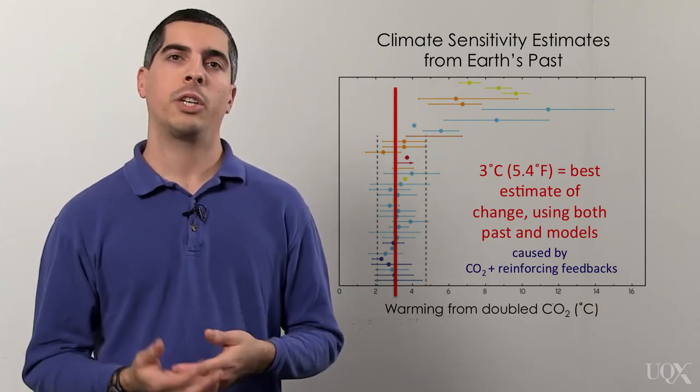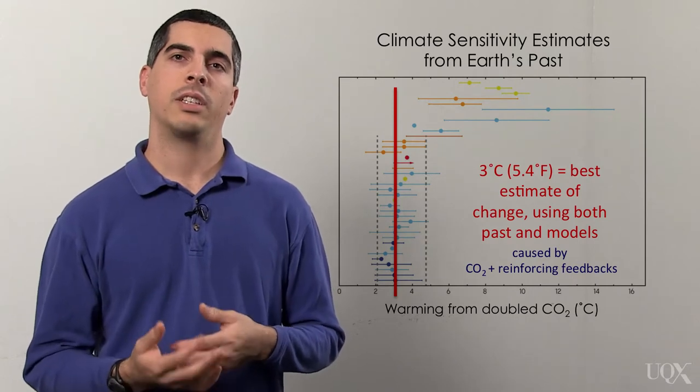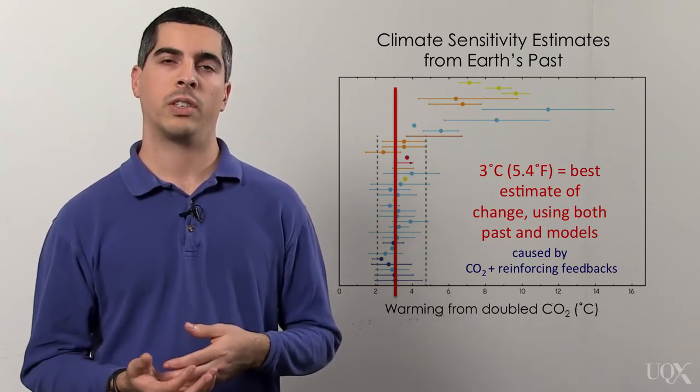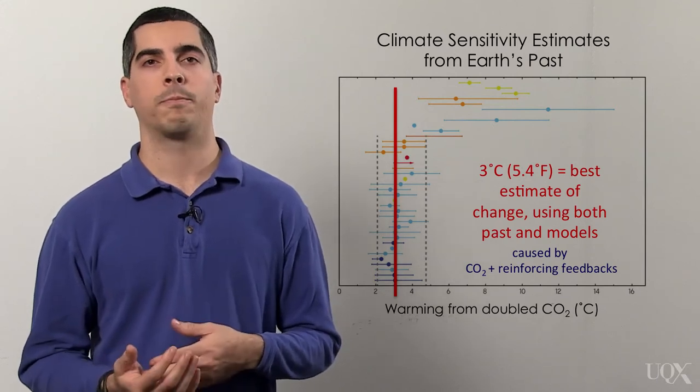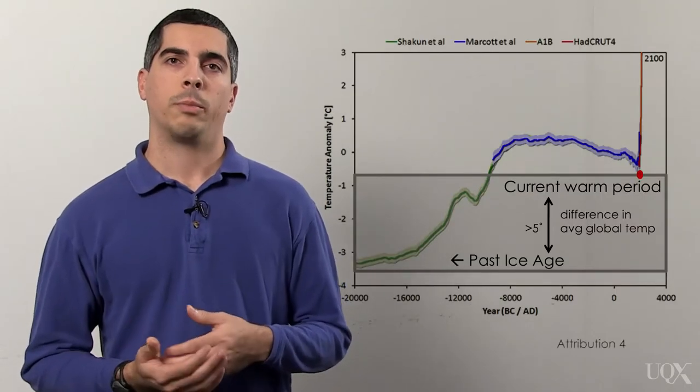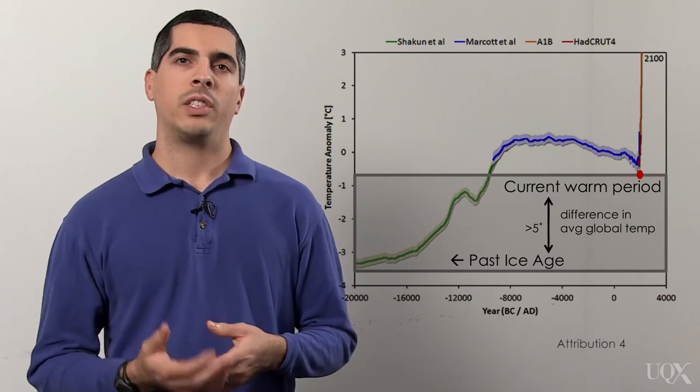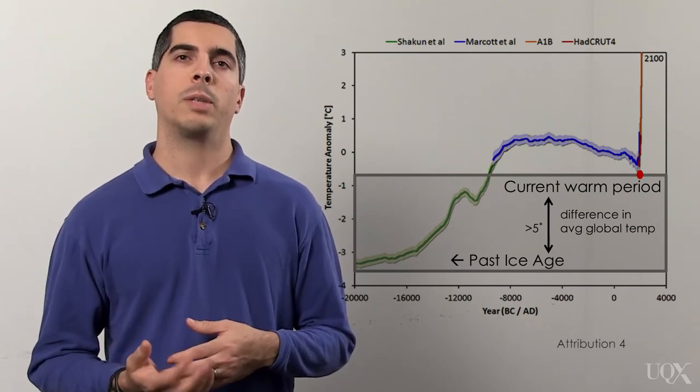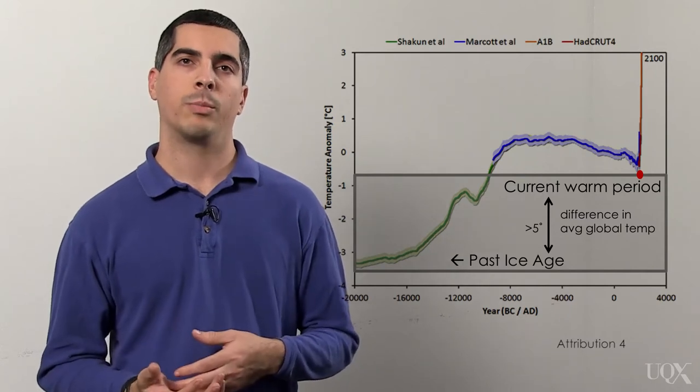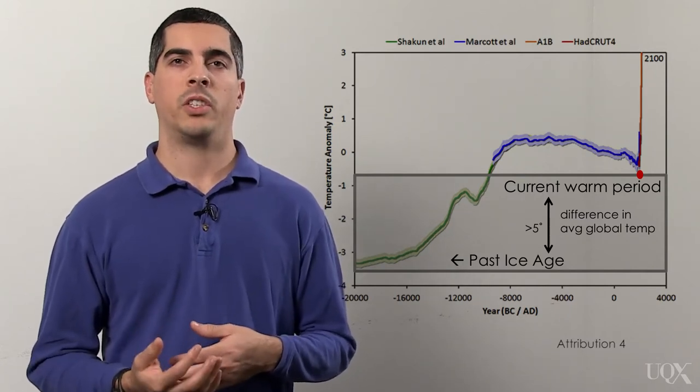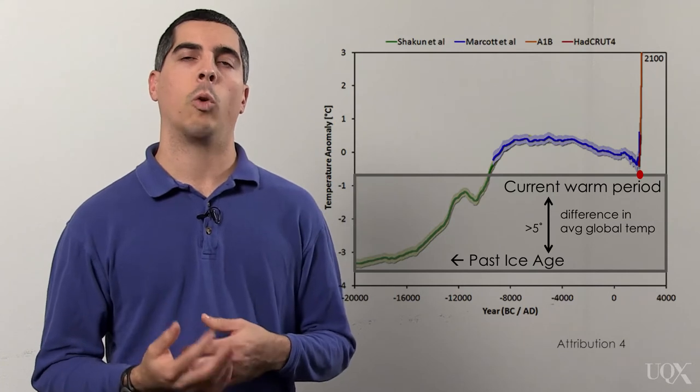Remember, direct warming from the increased carbon dioxide greenhouse effect is only about 1.2 degrees Celsius. Reinforcing feedbacks roughly double or triple that warming. 3 degrees warming may not sound like very much, but the difference between an ice age and the current warm period is only about 4 to 5 degrees Celsius, or 8 to 9 degrees Fahrenheit. Seemingly small temperature changes make a big difference when you're talking about the whole planet.